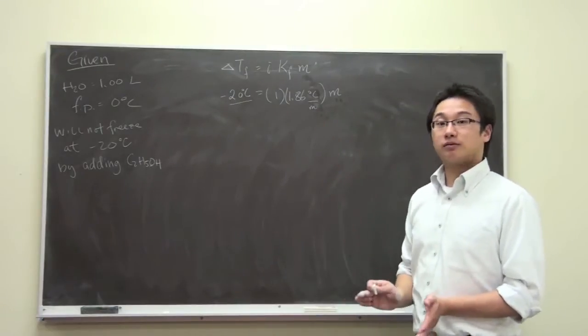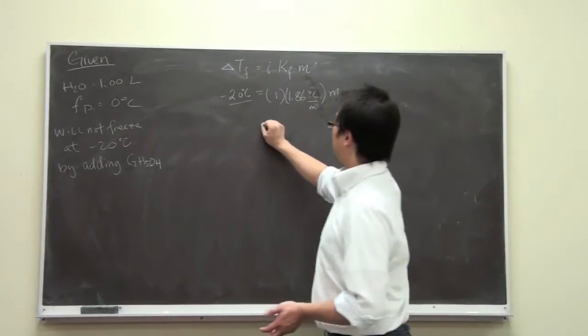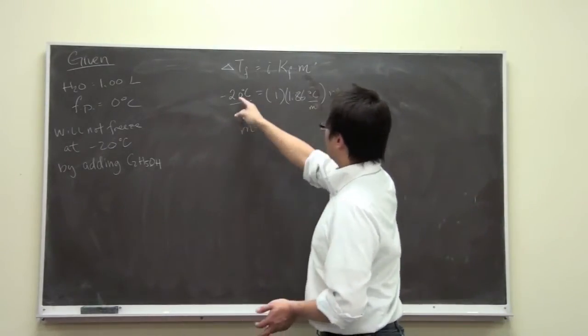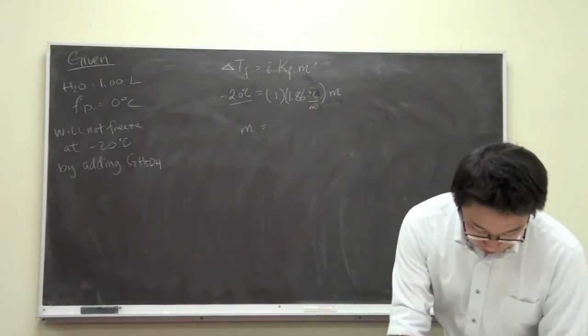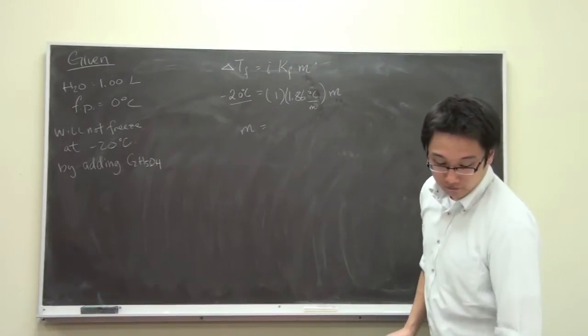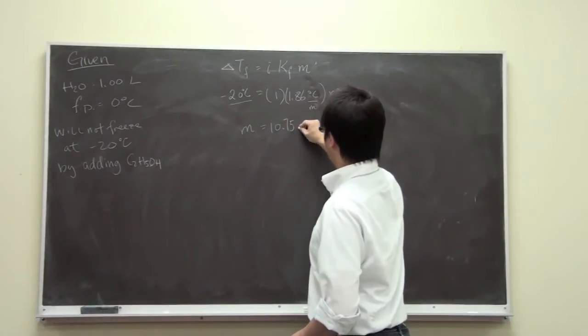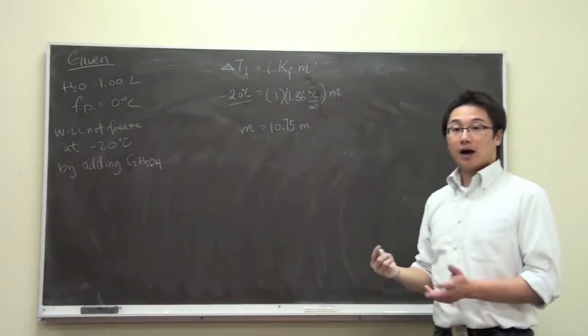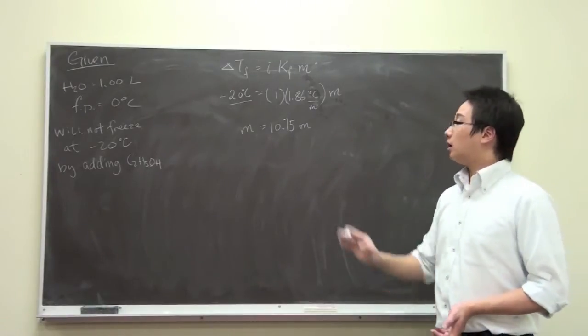So we can calculate the molality by simply having 20 degrees Celsius divided by this constant. So let me do it quickly. 20 divided by 1.86. So we have 10.75 molal for the ethanol solution. That is the concentration of molality for the ethanol.